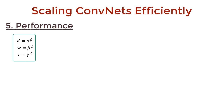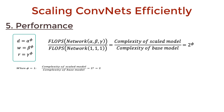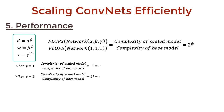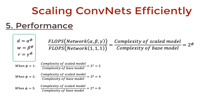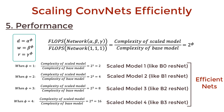Once we have the optimal values of alpha, beta, and gamma from the grid search, we can compute D, W, and R by taking phi equal to 1. This gives us the most efficient model that can handle up to 2 times the FLOPs of the base architecture. By increasing phi to 2, 3, 4, and so on, we determine new values of D, W, and R. When phi equals 2, we get the best model with up to 4× FLOPs; phi equals 3 gives up to 8×; phi equals 4 gives up to 16×. So we get a family of efficient models at different complexity levels, and in practice we set phi depending on the capability of our hardware.